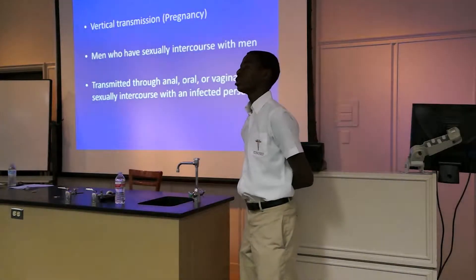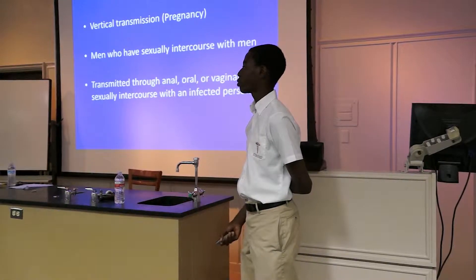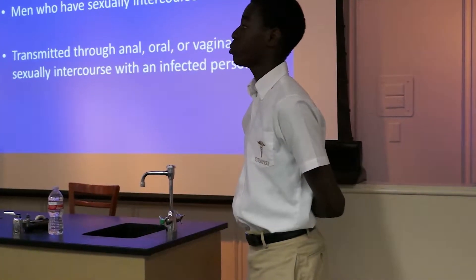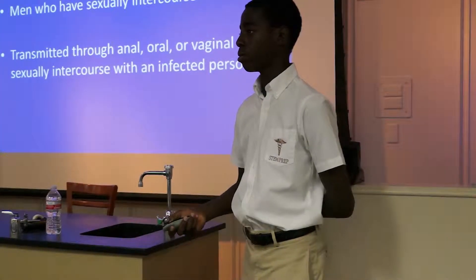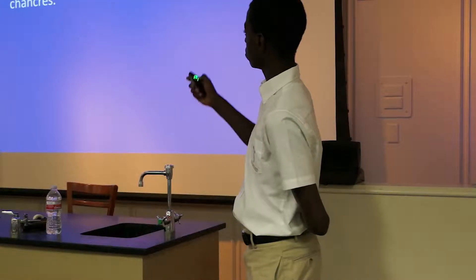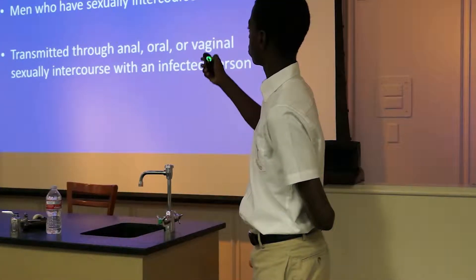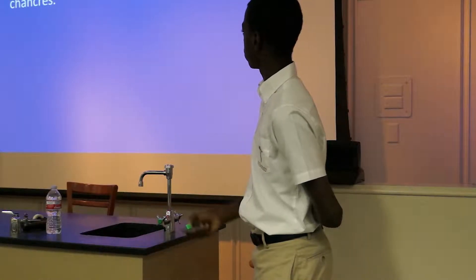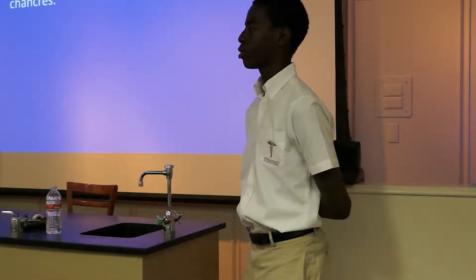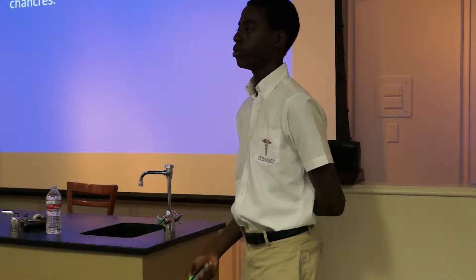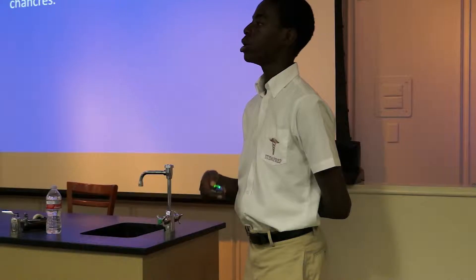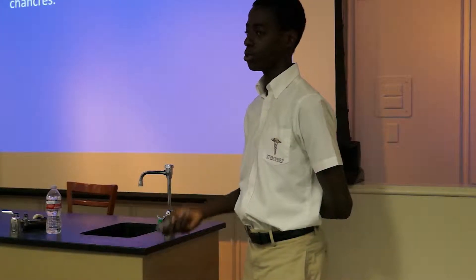Transmission. Syphilis can be transmitted through vertical transmission, which is when the mother has syphilis and passes it to her baby. It can also be transmitted through men who have sex with men, and through oral, vaginal, or anal sex. It can also be transmitted through chancres — the sores mentioned earlier. If you come in contact with them during sex, that person can contract the disease, and it may take up to three days to a week for symptoms to appear.